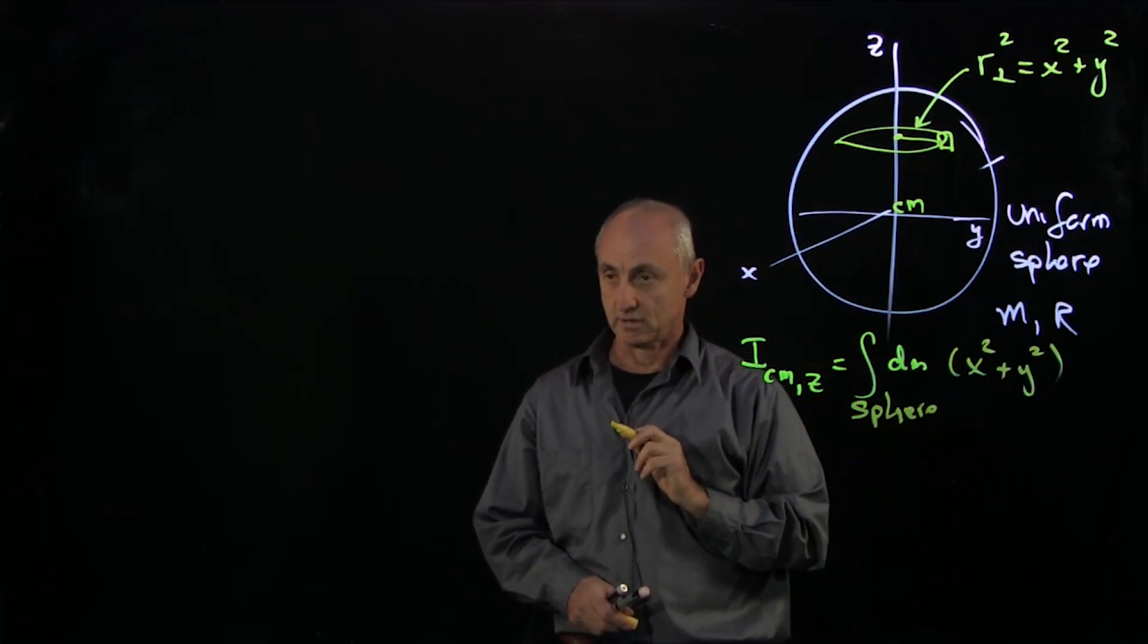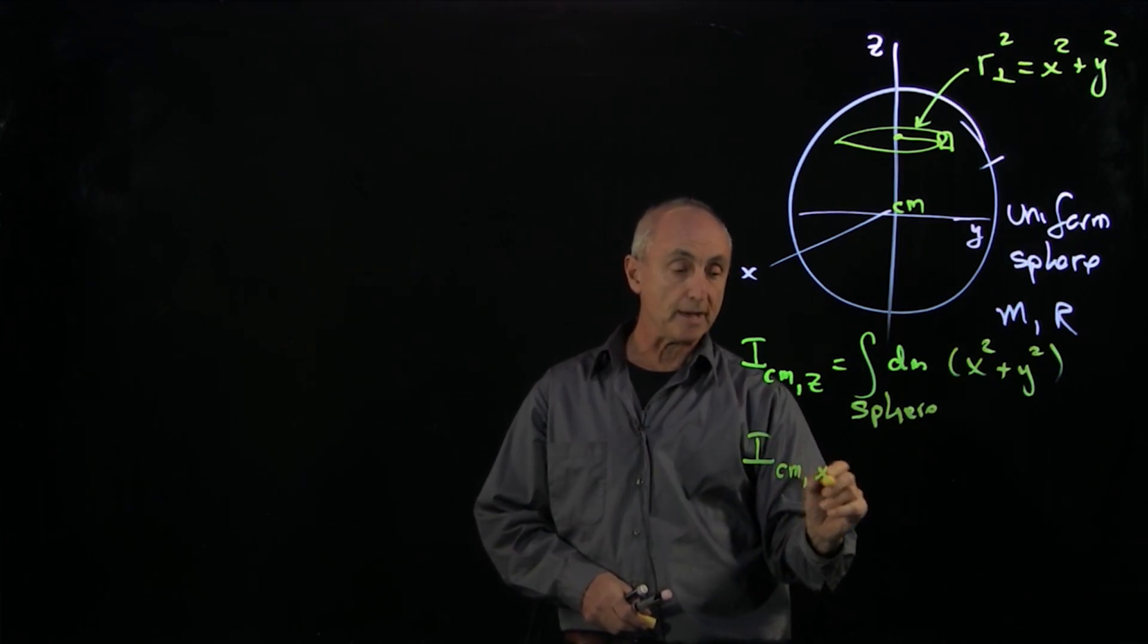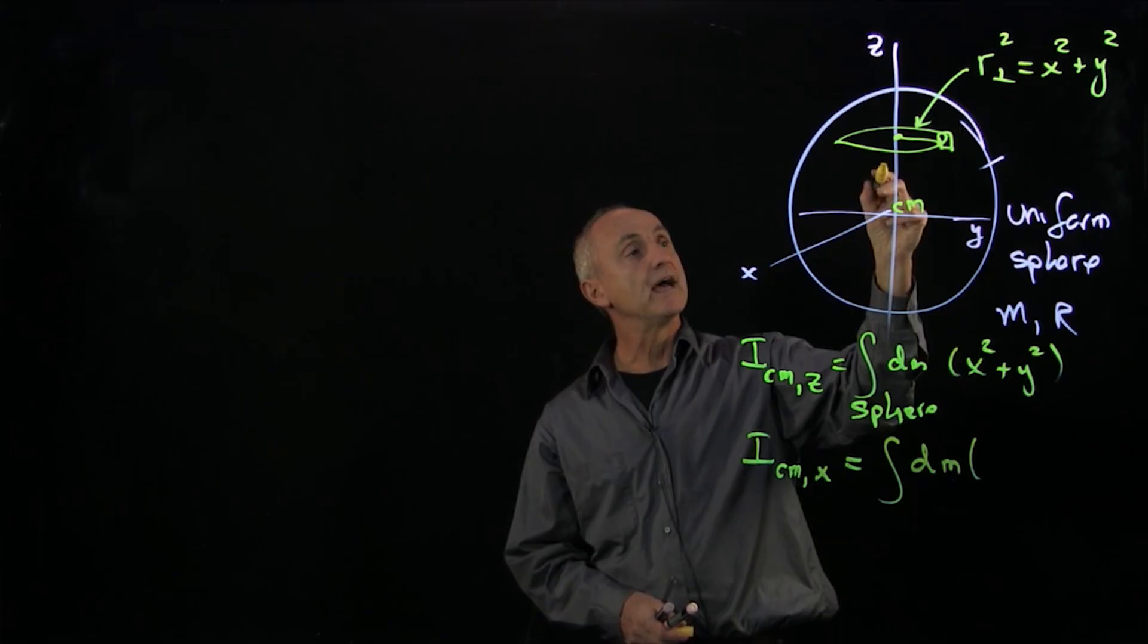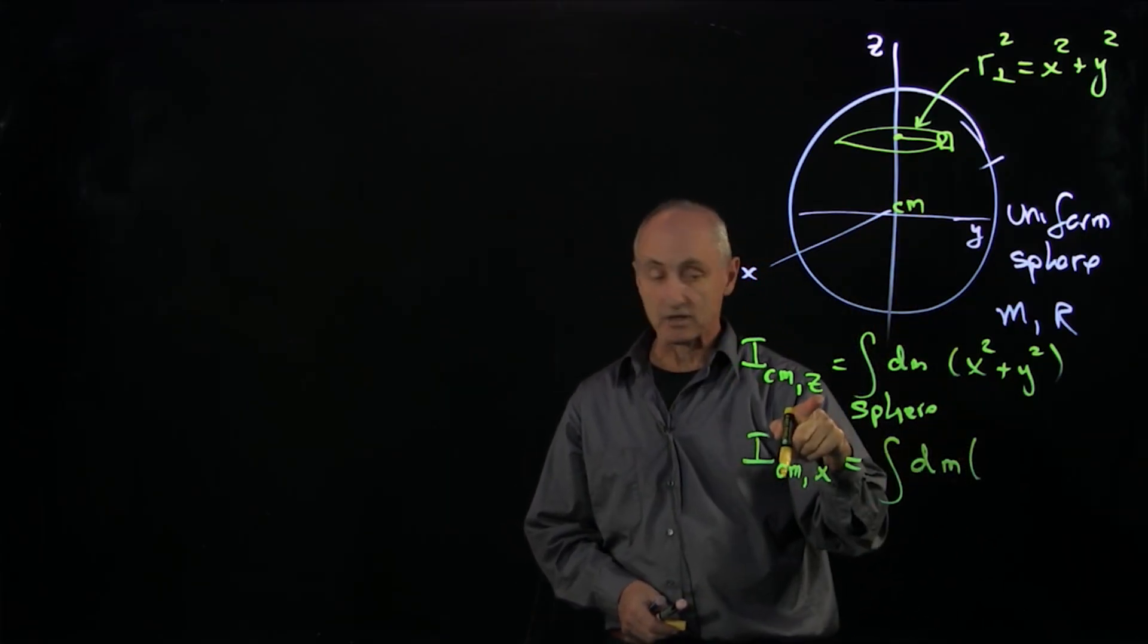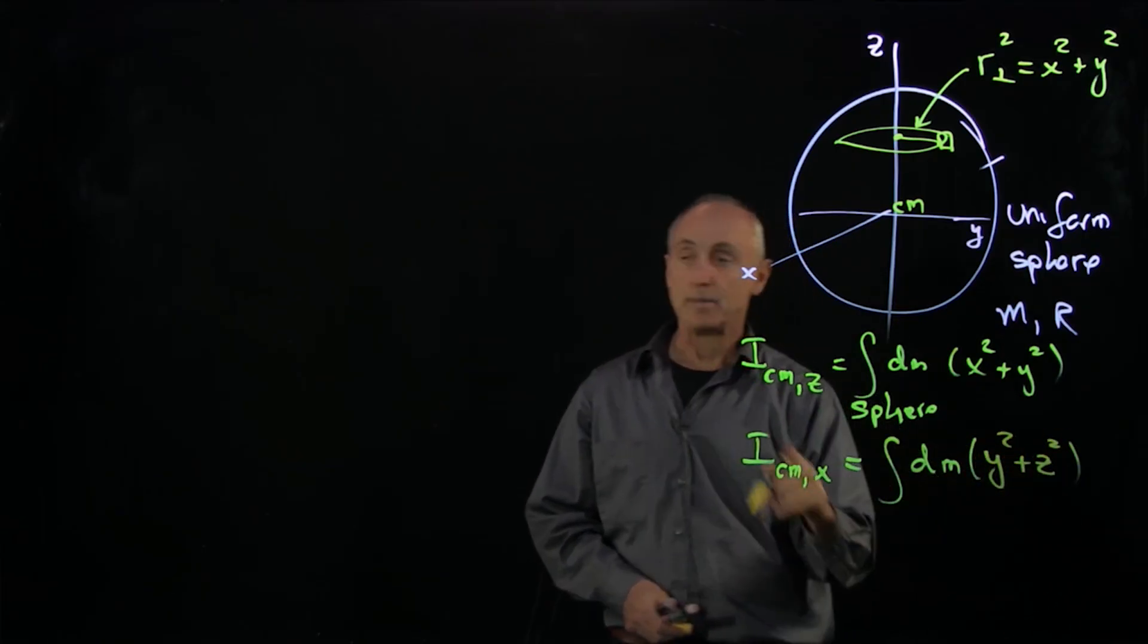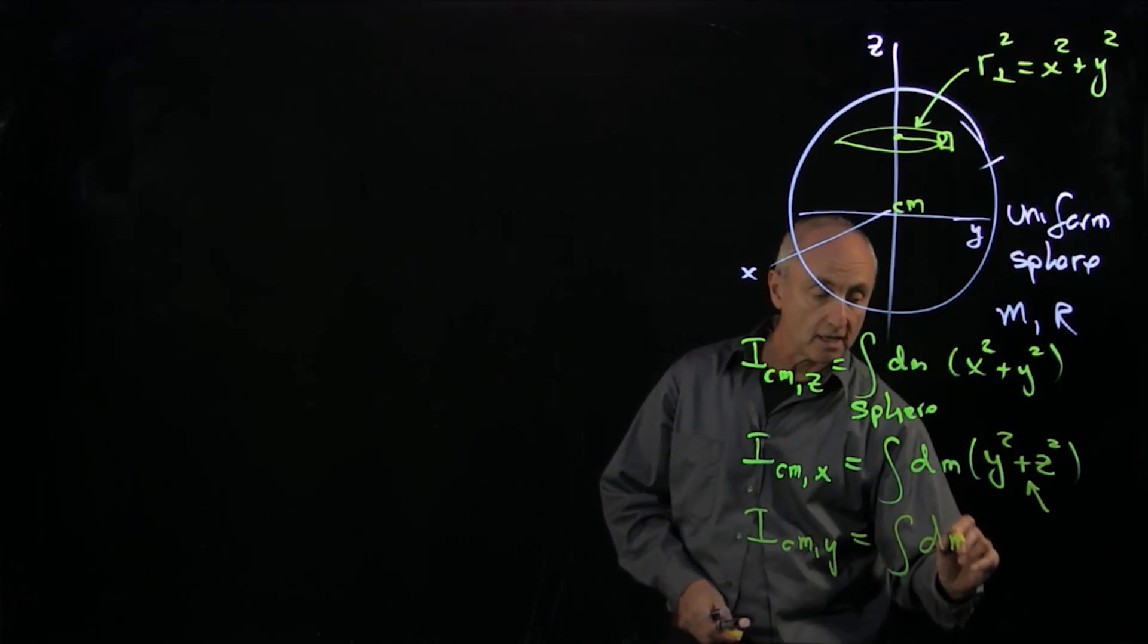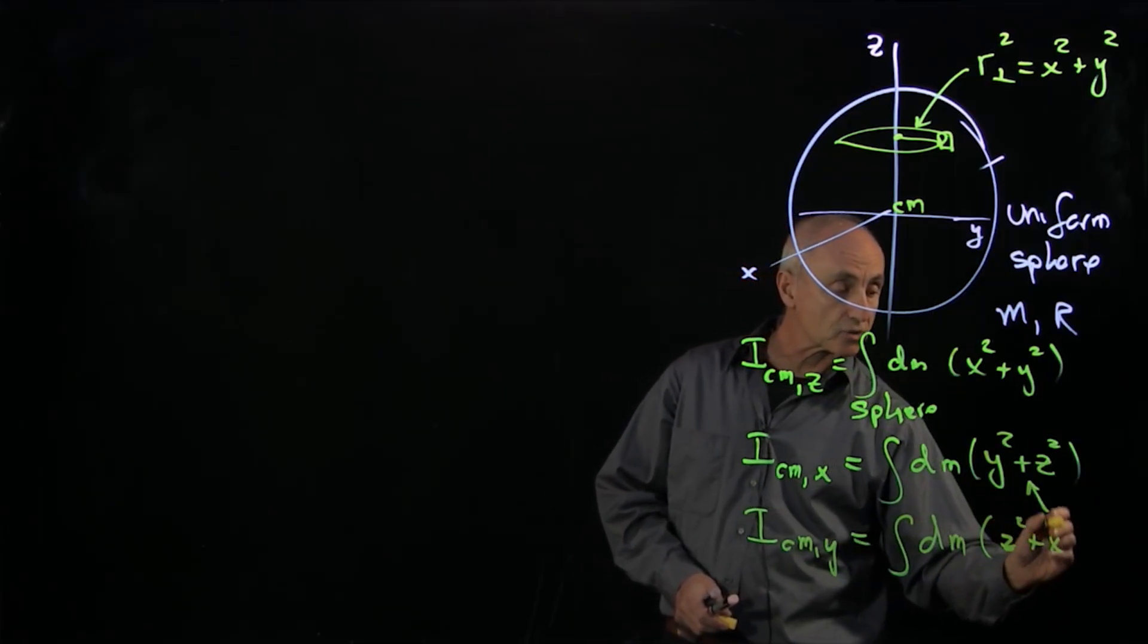Now, this looks like a tough integral. But let's now look at what would the moment of inertia be about the x-axis? If it's rotating about this axis and I had my mass element, instead of x squared plus y squared about the z-axis, it's y squared plus z squared about the x-axis. That's the perpendicular distance. And if I calculate the moment of inertia about the y-axis, then same argument, I have z squared plus x squared.